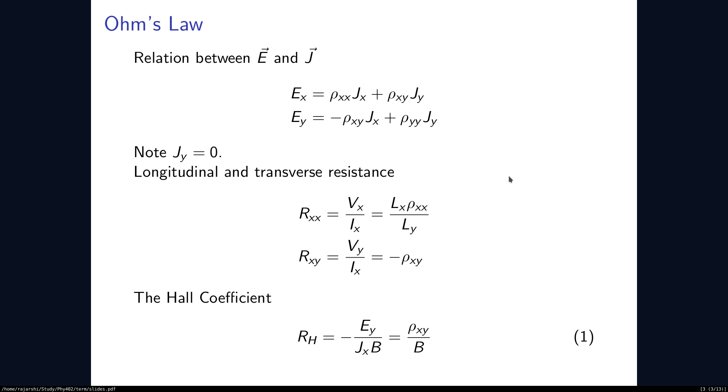When Ohm's law is generalized, we can say that the electric field produced by the current Ex and Ey is a linear combination of Jx and Jy. But in our case, the current is made to flow in the x direction, so Jy is 0.